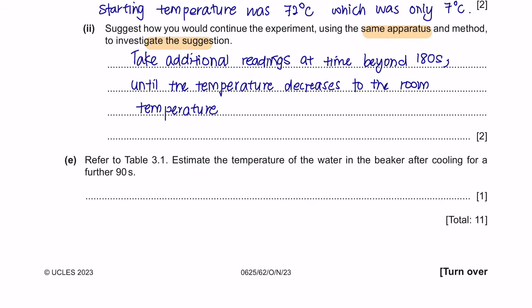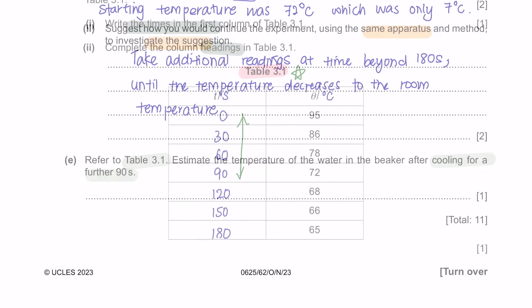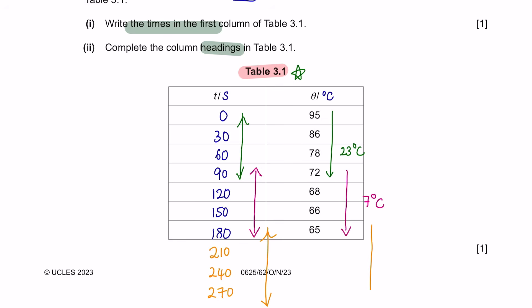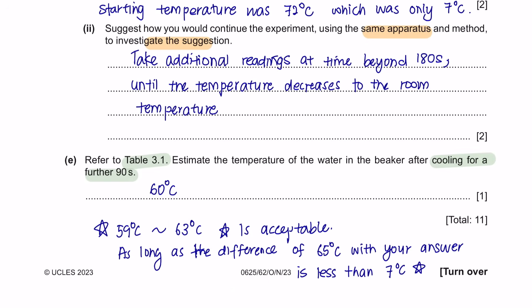Question E. Estimate the temperature of the water after cooling for a further 90 seconds. During the first 90 seconds, temperature decreased by 23°C. During the second 90 seconds, it decreased by 7°C. For the next 90 seconds, the decrease should be less than 7°C. Any value from 59 to 63 degrees Celsius is acceptable, as long as the difference from 65°C with your answer is less than 7°C.